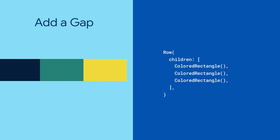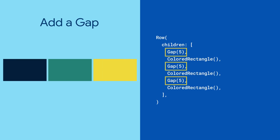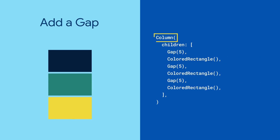Instead, you can add a Gap. It's like a SizedBox, but you don't have to keep track of whether it's inside a row or a column. You'll always get a gap that takes up the specified space in the parent container's main axis direction.